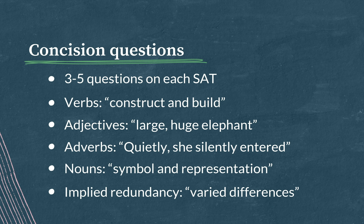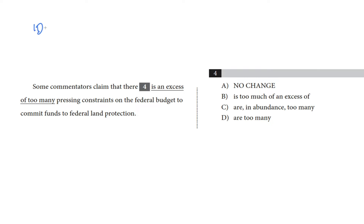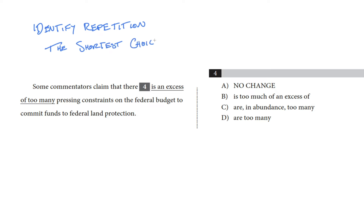Varied differences is redundant because differences already kind of implies variation. This category is a test of your ability to recognize repetition — to look at a choice and think, wow, that's really clunky. You want to be able to identify repetition and understand that for a question like this, the shortest choice is usually the best choice.